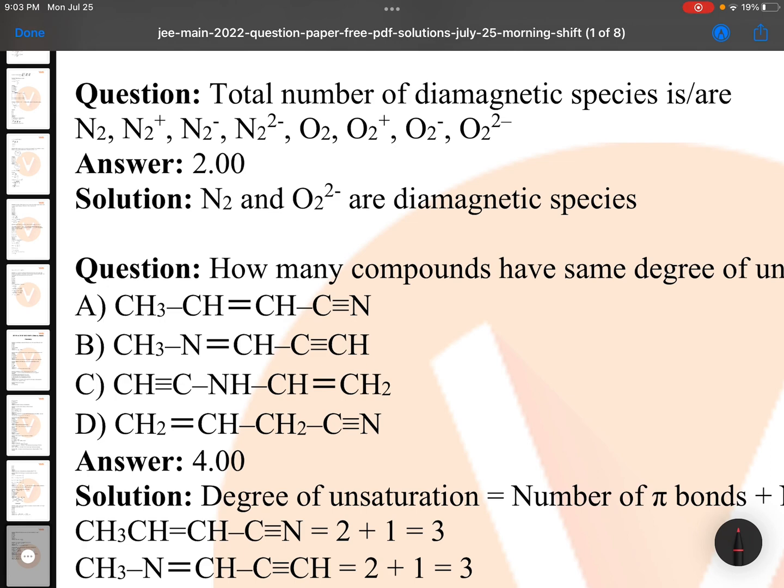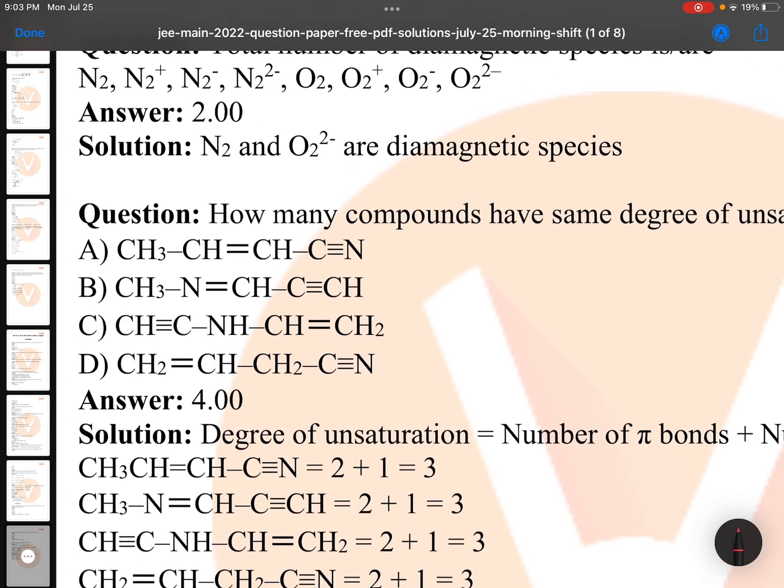16 electrons means that is like O2. So N2 minus 2 and O2 are with 16 electrons, so they are paramagnetic. O2 plus paramagnetic, O2 minus paramagnetic, O2 minus 2 is diamagnetic. So answer is only 2, first one and last one.